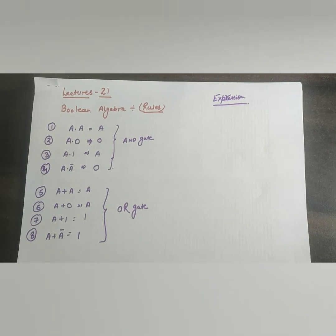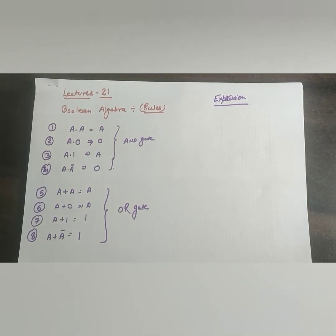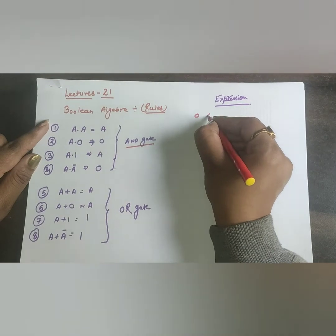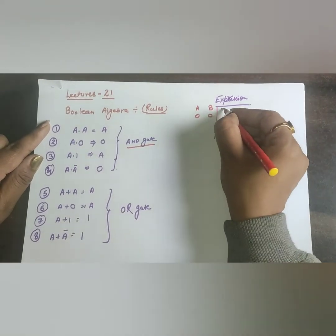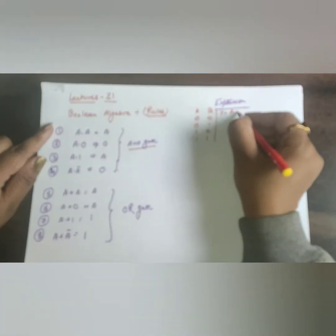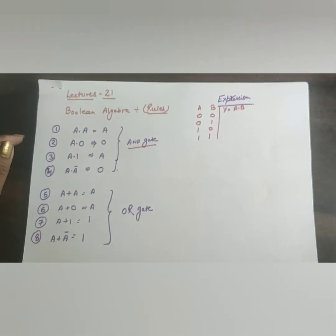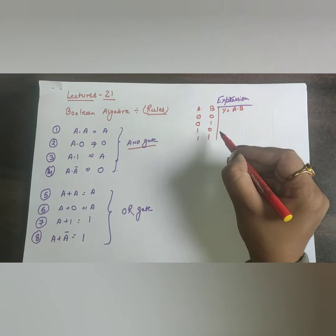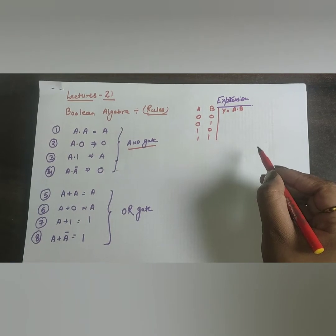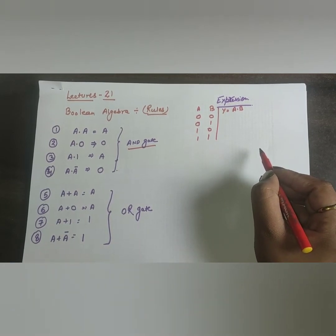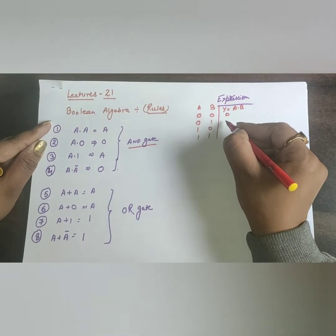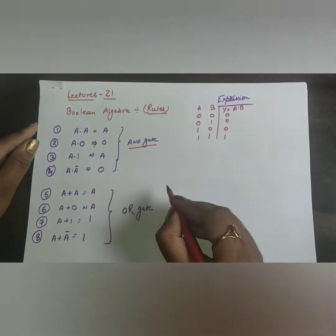First is the AND gate rule. In the AND gate, inputs are A and B, output is A·B, and there are four possible input combinations. We get output only when all inputs are 1; if any input is 0, we do not get the output. So the truth table outputs are: 0, 0, 0, and 1.